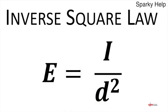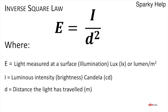The inverse square law consists of this formula: E equals I over D squared. How does this actually work? E is the light measured at a surface, the illumination measured in lux or lumens per meter squared. I is the luminous intensity, the brightness, measured in candela (cd). And D is the distance the light has traveled, measured in meters.